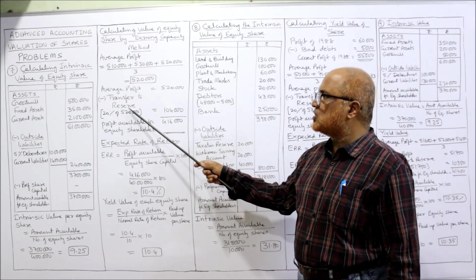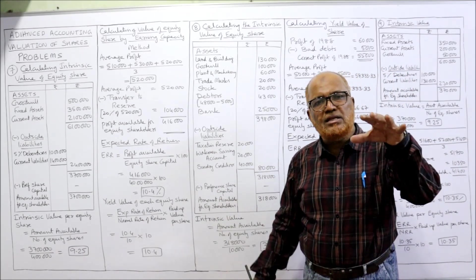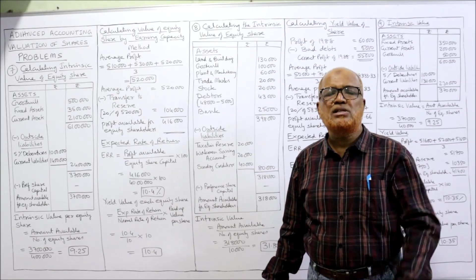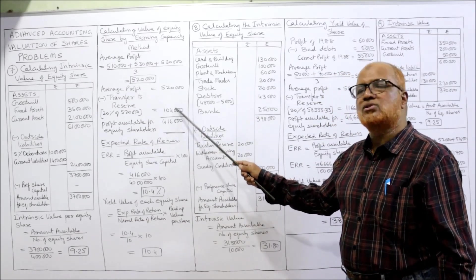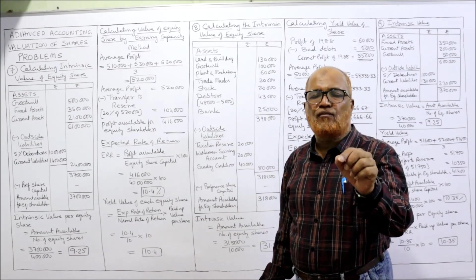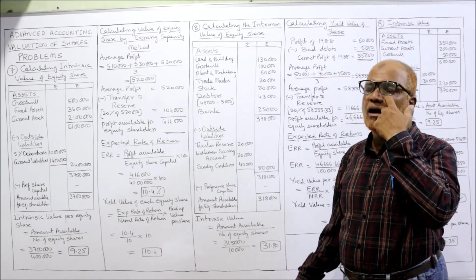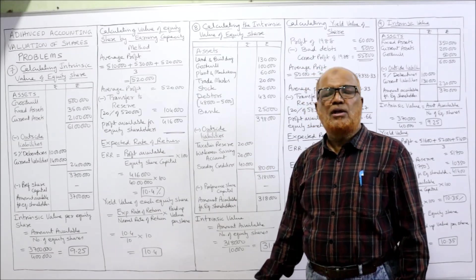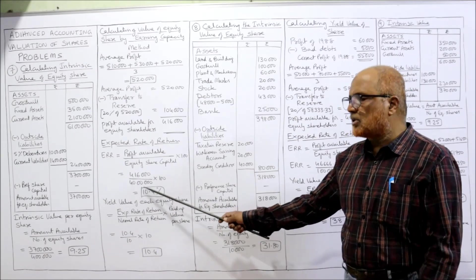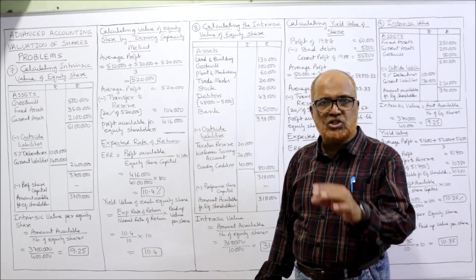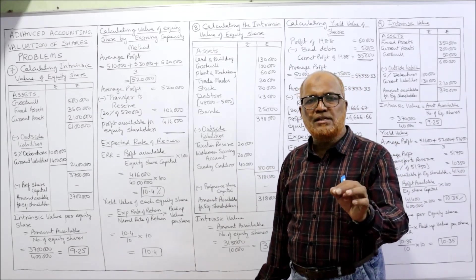From average profit, less transfer to reserve. It is given in the problem — 20% of profit to reserve. So 20% of 5 lakh 20,000 = 1 lakh 4,000 subtracted, leaving 4 lakh 16,000. This is the profit available for equity shareholders. Now we need ERR (expected rate of return). ERR formula: profit available ÷ equity share capital × 100. Equity share capital is given: 40 lakh. So 4 lakh 16,000 ÷ 40 lakh × 100 = 10.4%. This is the ERR.